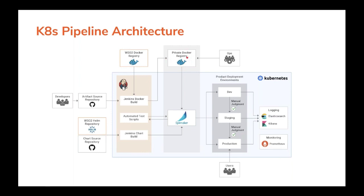For a product deployment to be created or updated, Spinnaker expects a new Docker image. There are three ways an update can be triggered. The first is when Helm chart configurations are changed in the GitHub chart source repository. Jenkins pushes the Helm chart and overridden configuration to Spinnaker, which will create or update the dev environment. The pipeline then prompts the user to approve changes to the staging environment, and once staging tests pass, prompts again for approval to deploy to production.